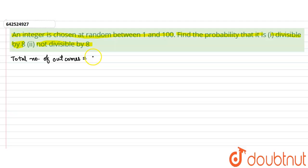So there are 98 outcomes because 1 and 100 are to be excluded, because the integer is chosen at random between these two. So total number of outcomes is 98.